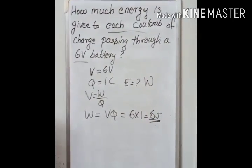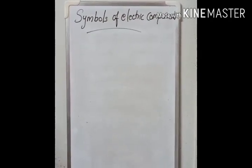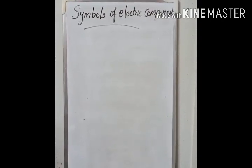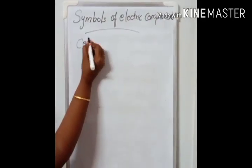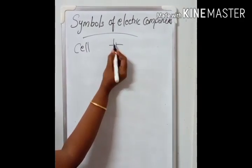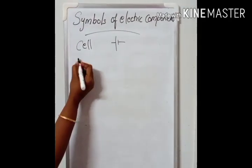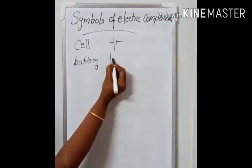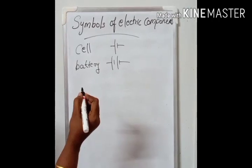These are direct questions. Next, we are going to study about the symbols of different electric components. We know that to draw a circuit diagram, we need to know the symbols. You are familiar with some symbols. You know that a cell is represented by a bigger line and a smaller line. The big line shows the positive terminal. The smaller one shows the negative terminal. What is the symbol of a battery? A combination of two or more cells is called a battery.